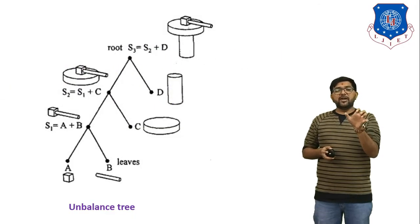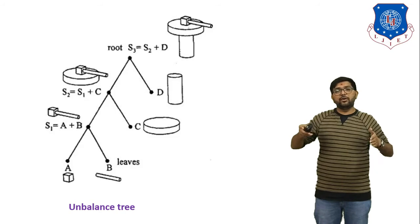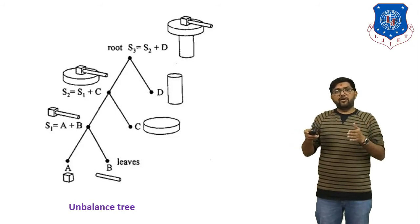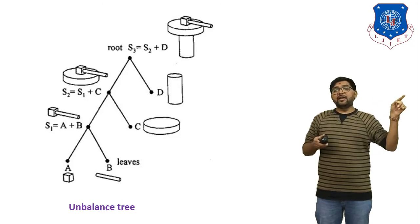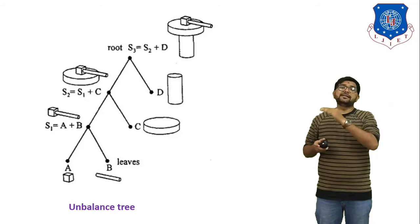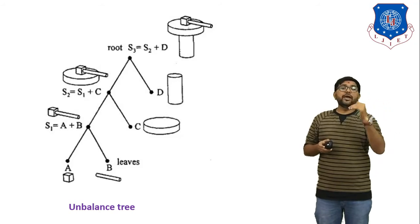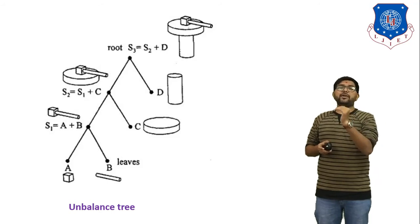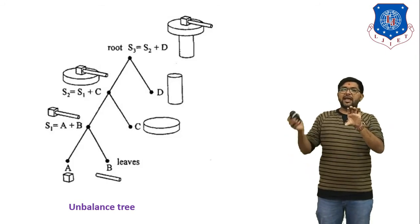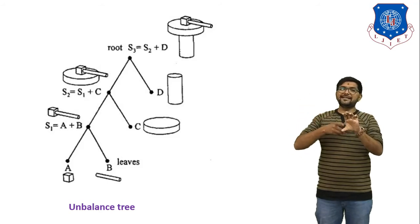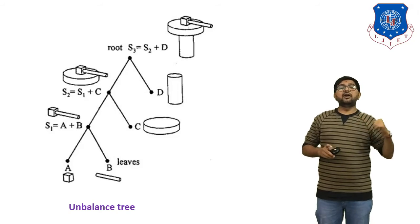In the unbalanced tree, first we combine two components A and B and name the result S1. After that we add one more component C, giving S2 which equals A plus B plus C. Then we add the last object D, so the root S3 equals S2 plus D, meaning A plus B plus C plus D. In the unbalanced tree, we start with one object and add each additional object one by one.